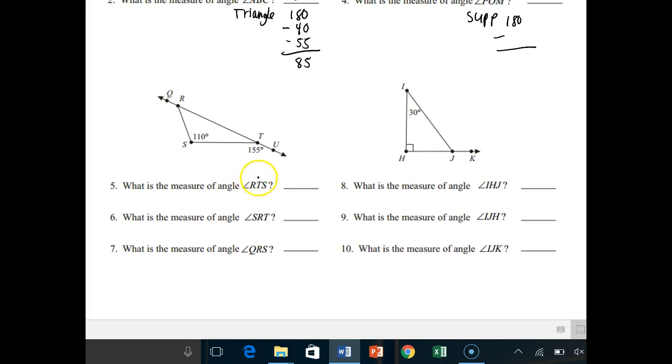For number 5, what is the measure of RTS? RTS is an interior angle here, but lies on the straight line with 155 degrees. That's a supplementary relationship. 180 minus 155 gives you your answer to 25 degrees. You should now write 25 inside here.